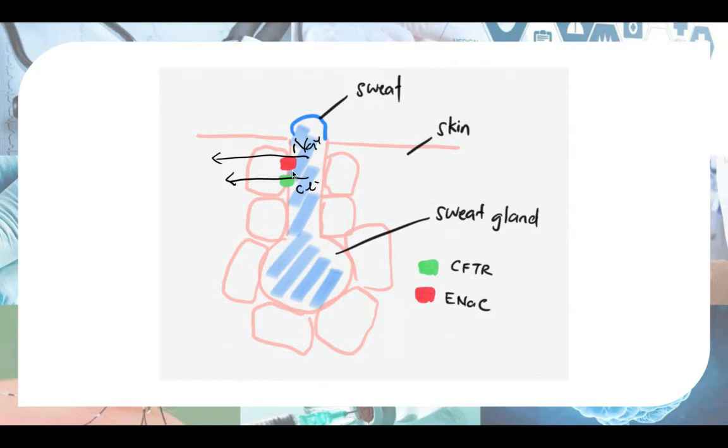However, in your sweat glands, the CFTR gene does not function to down-regulate ENAC. So it will be a different story here.